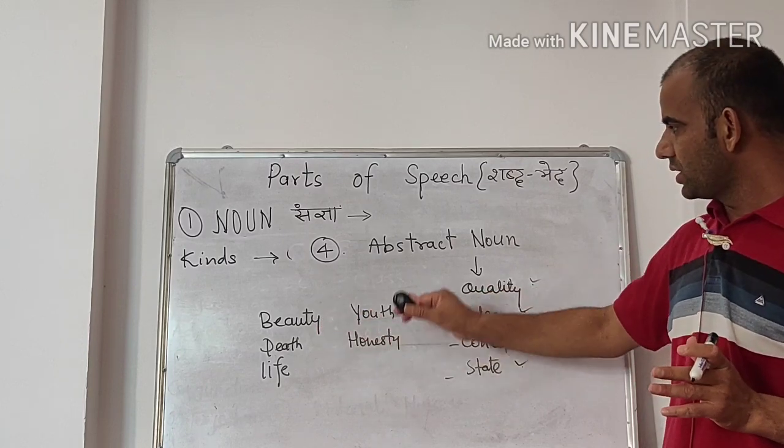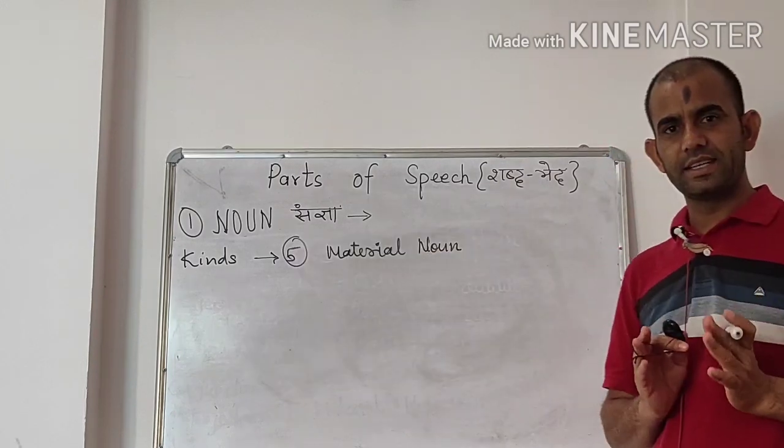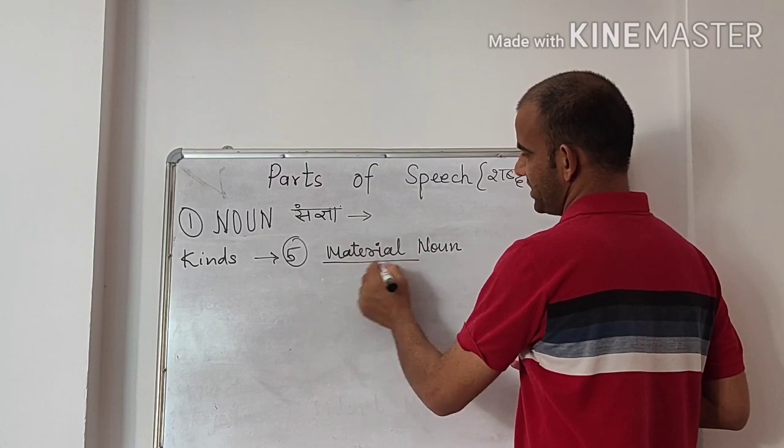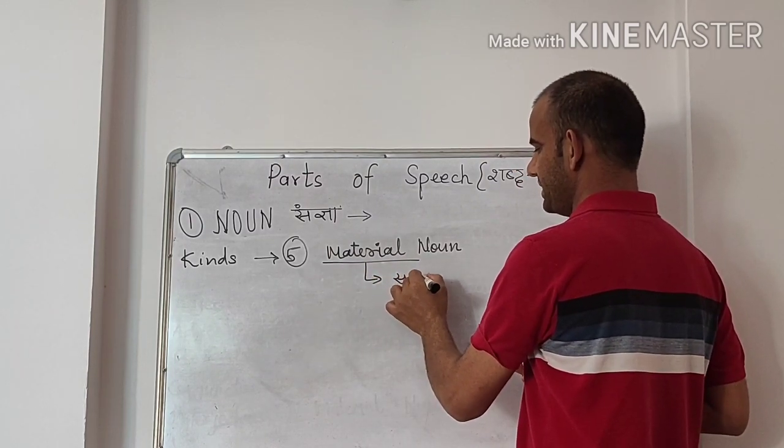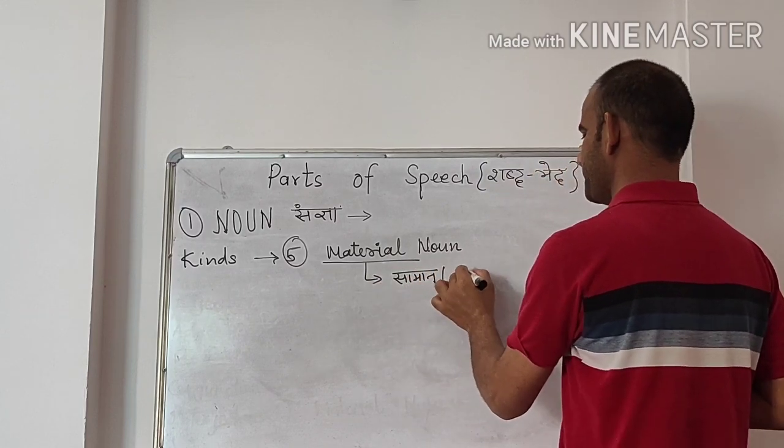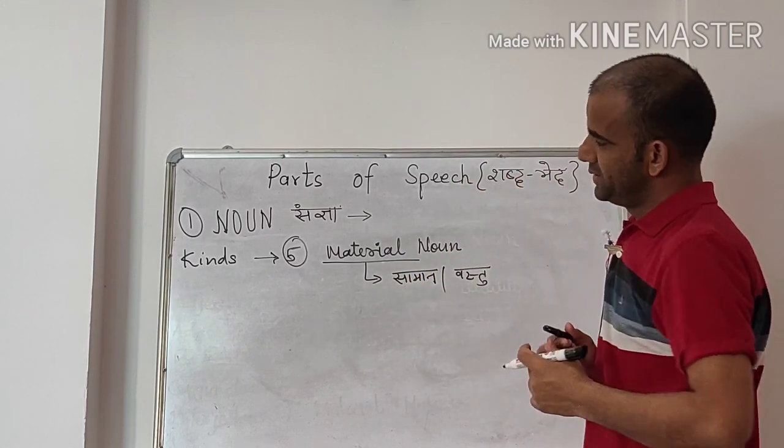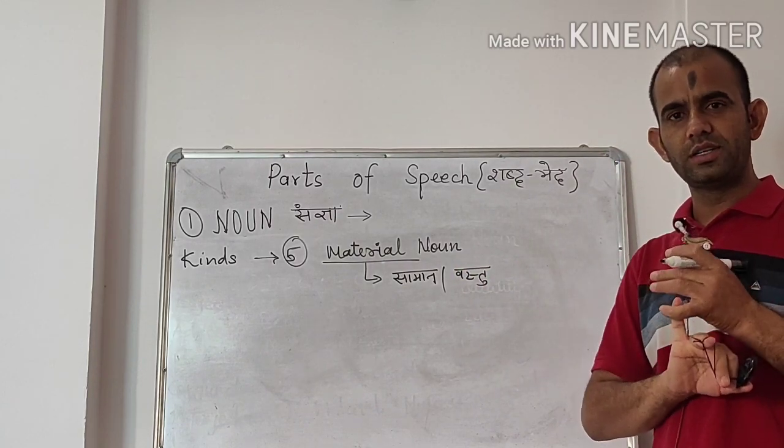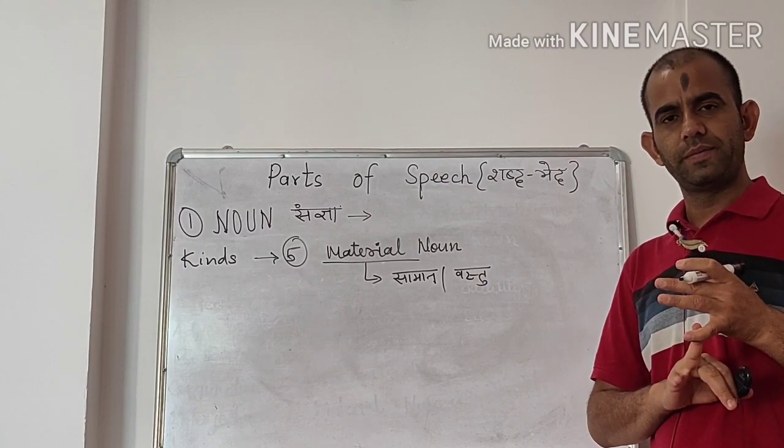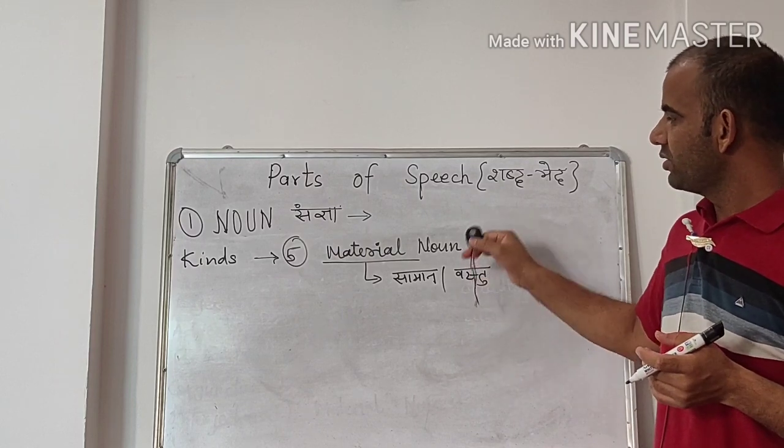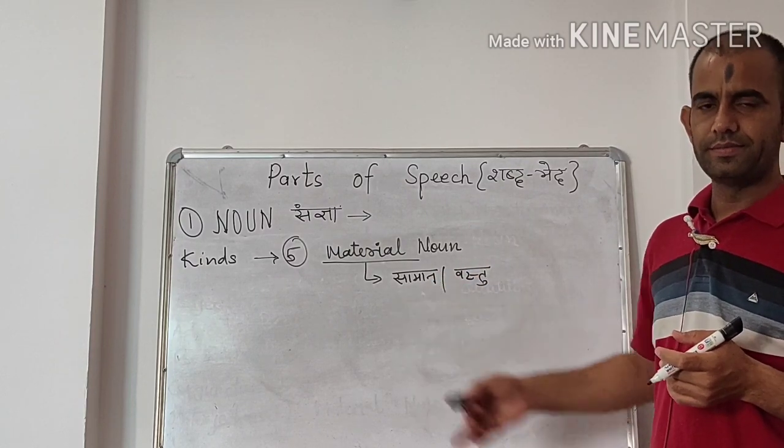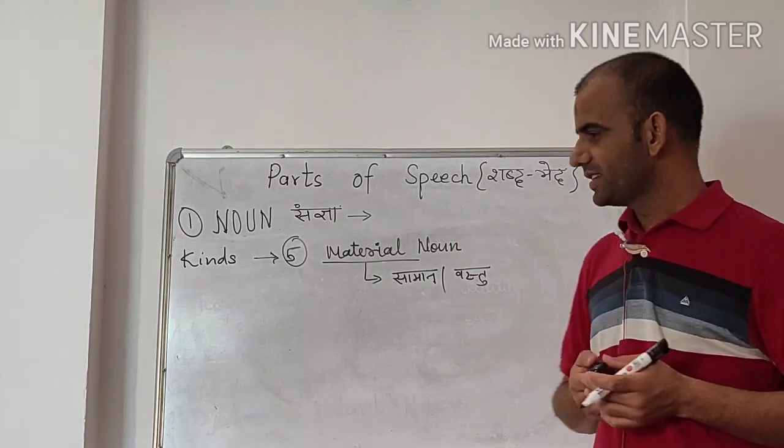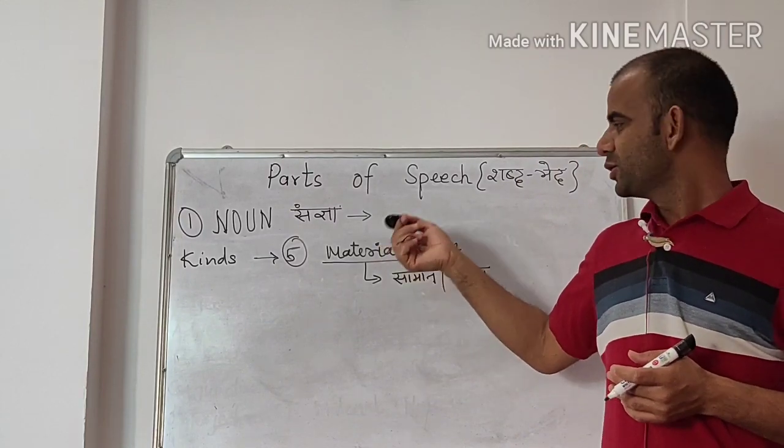The last is material noun. Material means raw material. So in this type of noun we include all the material like gold, coal, sugar, water, etc. So in material noun we include all the material. So these are five kinds of noun.